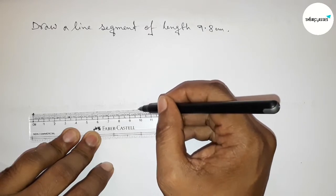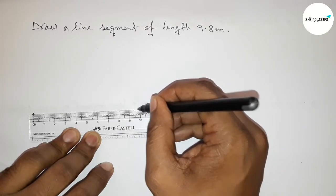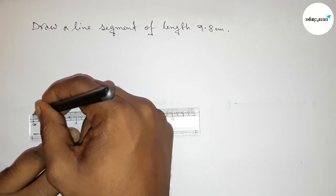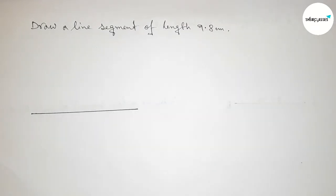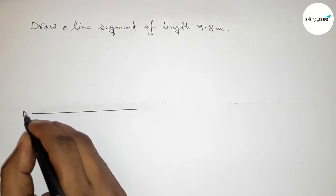So first marking nine point eight then joining the line perfectly. Okay, so now taking point here A and here B.